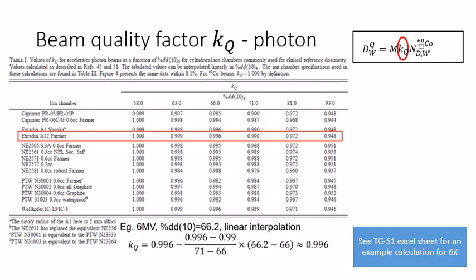As we said, we need to obtain the percentage depth dose at 10 cm to begin with. So for example, for a 6MV beam, we obtain this PDD at 10 equals 66.2 from the scan PDD data.